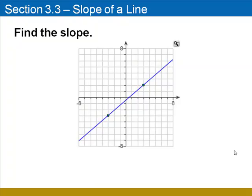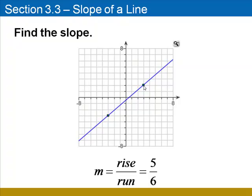To find the slope of a line, we need to calculate the rise over the run based on two points that we know are on the line. In this example, we have one point here to the left at negative 3, negative 3, and a second point here to the right at positive 3, positive 2. To calculate the rise, which is the numerator of the slope, we count 5 units upward. And then to calculate the run, we move 6 units to the right. So the rise is 5, the run is 6, and the slope is 5/6.